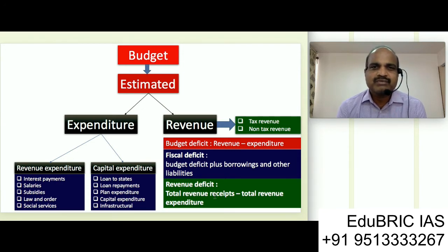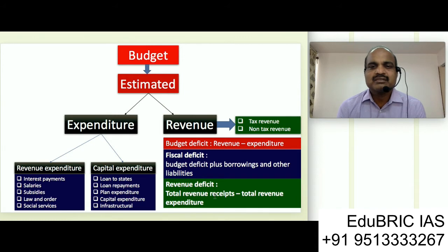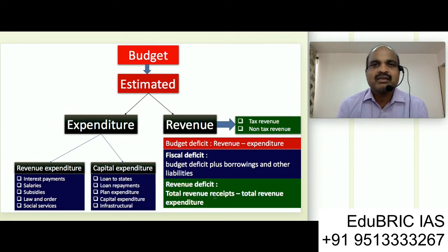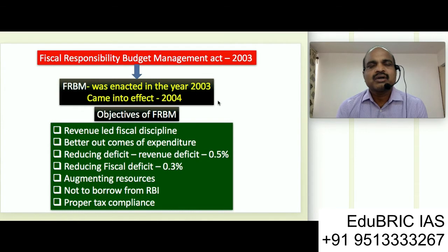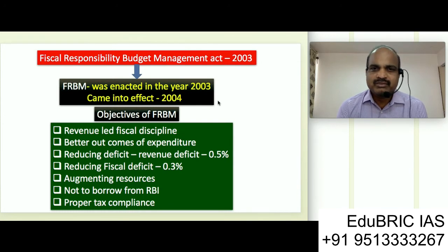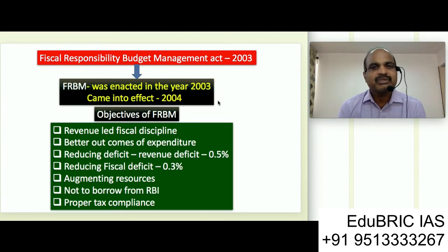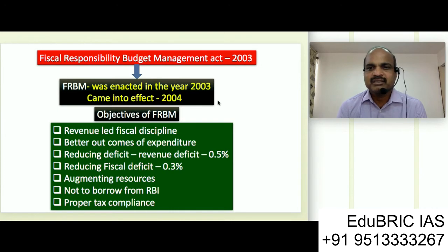When it comes to fiscal deficit, since we are more worried about debt, whatever budget deficit we have plus the borrowings and other liabilities makes the fiscal deficit — I will cover the meanings of borrowings and other liabilities in the next video. As you have seen, the government of India is spending a lot of money on running the government, so revenue expenditure is high. The Fiscal Responsibility and Budget Management Act's primary focus is on reducing revenue expenditure; therefore we call it revenue-led fiscal discipline.